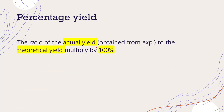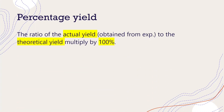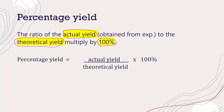And percentage yield is related to the actual yield that you get from the experiment compared to the theoretical yield that you get from the calculation, and you multiply by 100%. The formula is: percentage yield equals actual yield over theoretical yield times 100. This is the formula you need to remember.